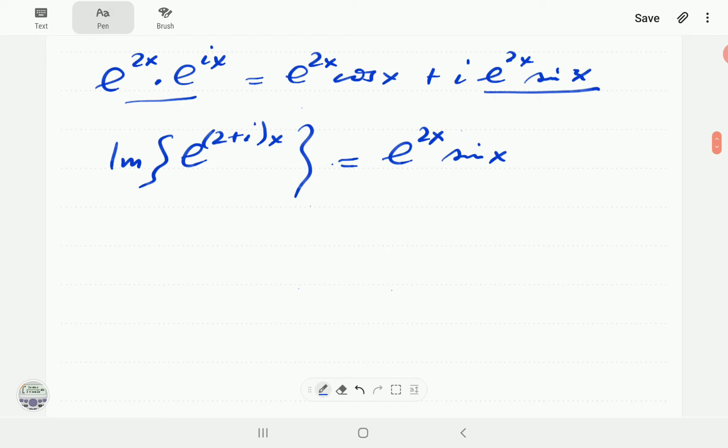So what's going to happen is then it means we can write this as the integral of the imaginary part of E to the 2 plus ix dx.